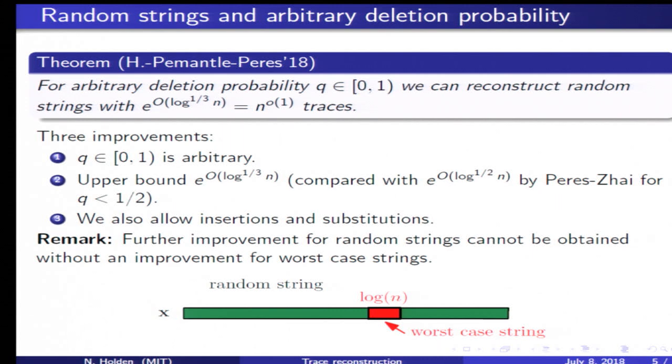The reason these two problems are closely related is that if we have some arbitrary string of length log n and a random string of length n, then it will typically be the case that this arbitrary string is a substring of the random string.